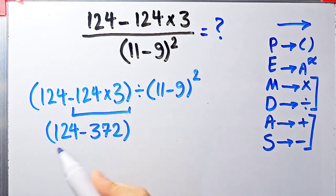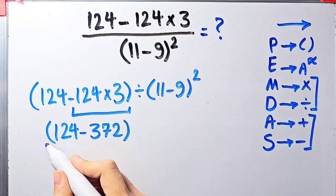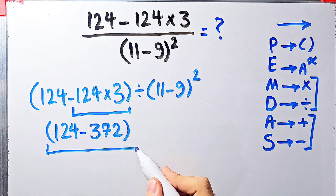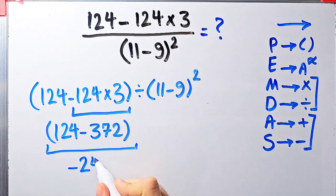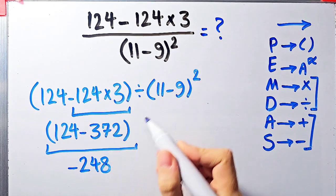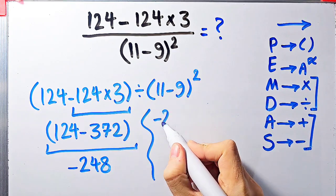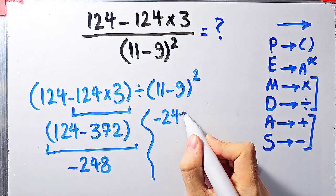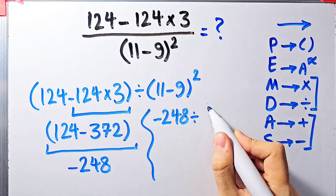124 times 3 equals 372, so we have 124 minus 372. The final answer of these parentheses equals negative 248. Now the question becomes: negative 248 divided by open parentheses 11 minus 9 close parentheses, all to the power of 2.